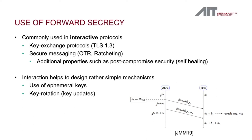Interactive protocols can be designed to provide forward secrecy with a relatively simple mechanism. For instance, in key exchange protocols, the use of ephemeral keys works quite well — for every session, new keys are sampled so that even if long-term keys get compromised, the confidentiality of past sessions is not endangered. Using the concept of key rotation or key updates in combination with ephemeral keys gives even stronger guarantees such as post-compromised security.